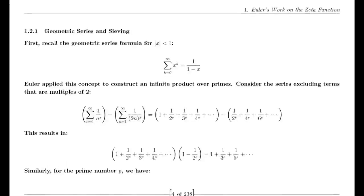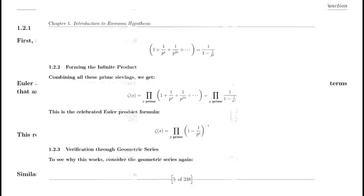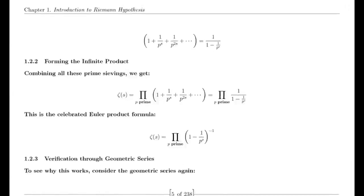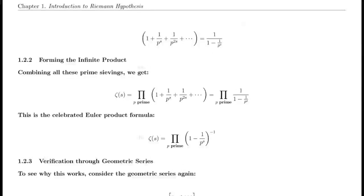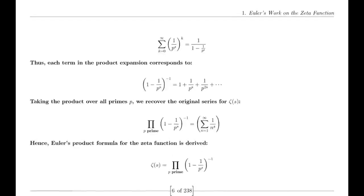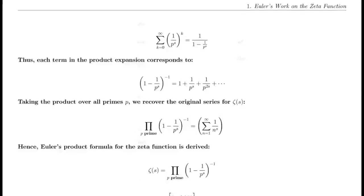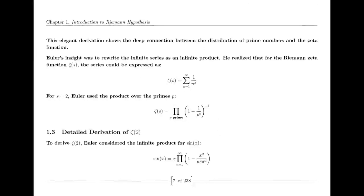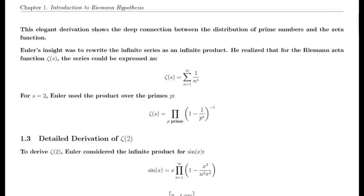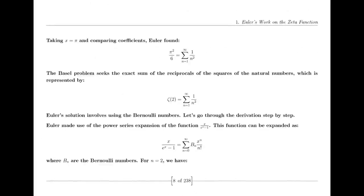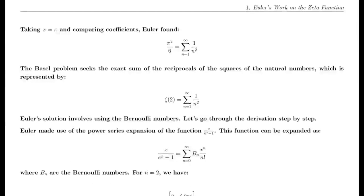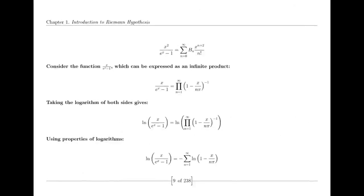Functional equation of the zeta function. The functional equation relates its values at s and 1 minus s through a complex expression involving pi, the gamma function, and trigonometric functions. This equation is a key result, showcasing the zeta function's symmetry. In 1859, Riemann published his seminal paper on the distribution of prime numbers, which introduced the zeta function and laid the groundwork for modern analytic number theory, influencing subsequent research and discoveries.